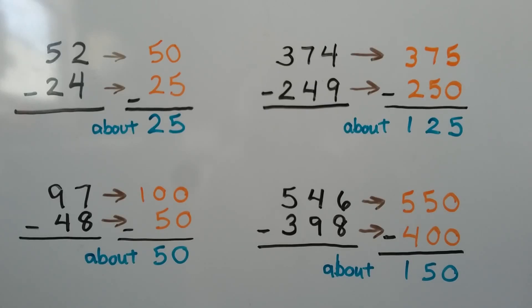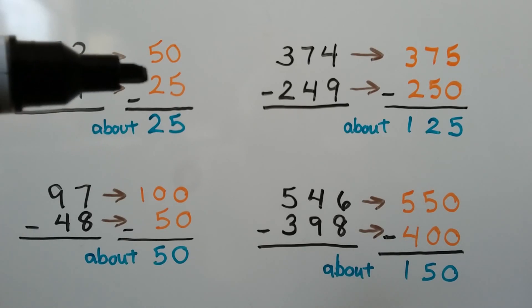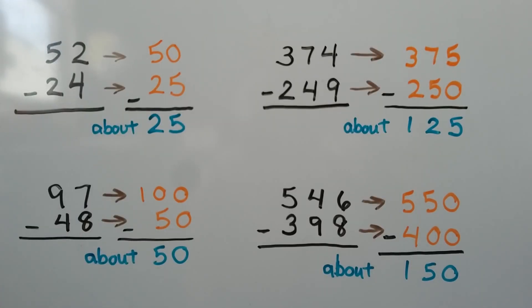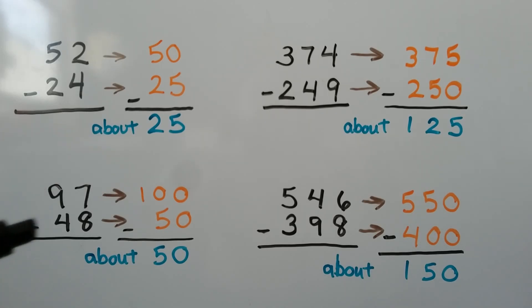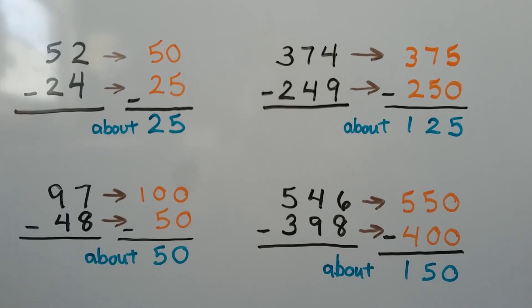Here are some more examples of using compatible numbers. We have 52 minus 24. We could say it's 50 minus 25 — that would be about 25, which is the estimate of our difference. Here we have 97 minus 48. We could say 100 minus 50, which are close to the actual numbers. That estimate would be about 50.